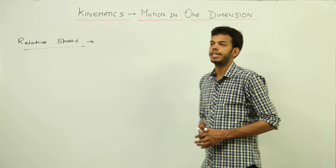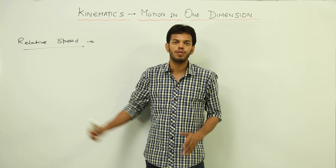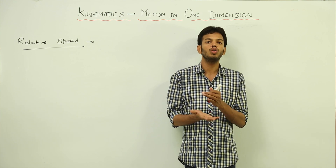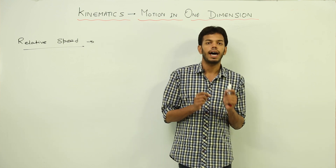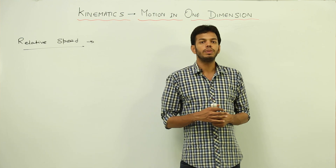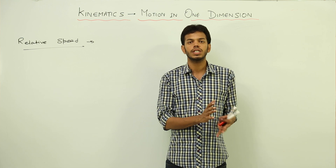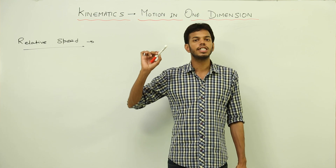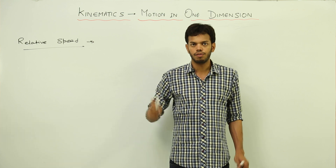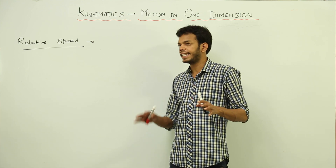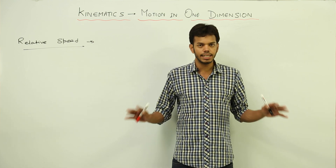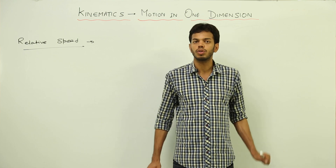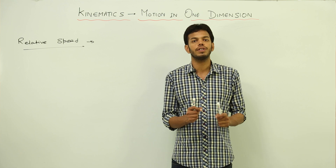To understand relative speed, you first have to go back to how we define rest. The definition of rest is when an object does not change its position with respect to time. For example, if I keep the reference frame as this room, I am not moving right now, so I am not changing my position with respect to time — so I am at rest.